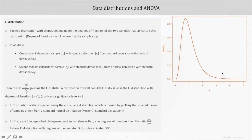So if X and Y are two independent chi-square random variables with U and V as degrees of freedom, then the ratio X by U divided by Y by V follows F-stat distribution. So that's about F distribution.